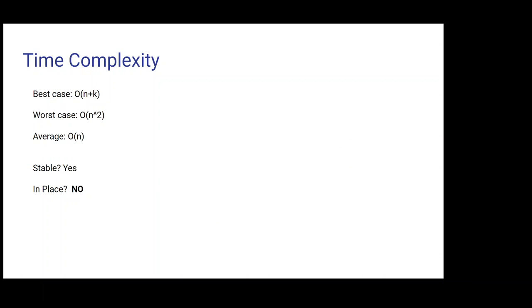Time complexity. We'll start with best case. Best case is O of N plus K, and that happens when the elements are uniformly distributed in the buckets with the same number of elements in each bucket, or close to the same number of elements in each bucket.